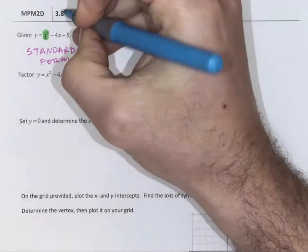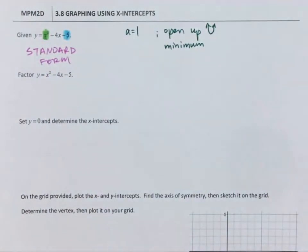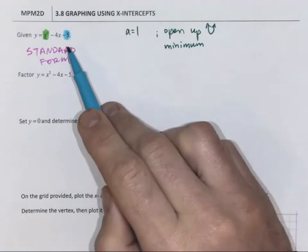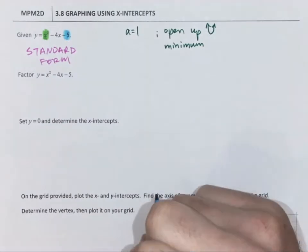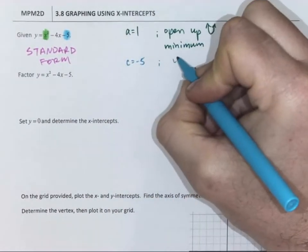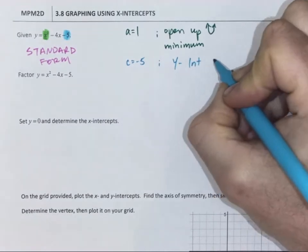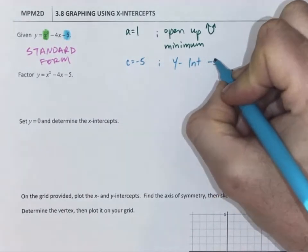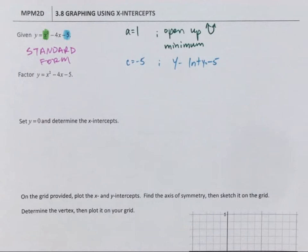The other thing it tells us in standard form is that the constant, negative 5 in the C position, is our y-intercept. Y equals negative 5. So I'm going to remember that for when I put it on the graph.